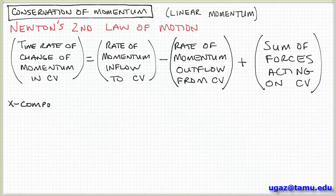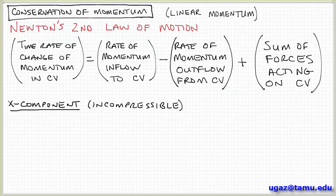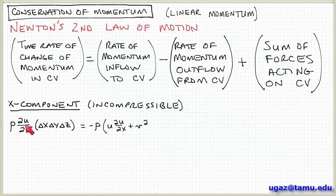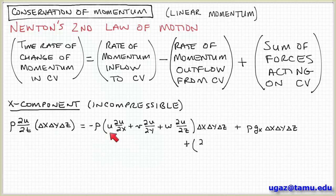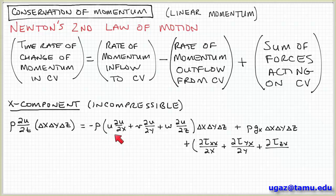We know what these terms are from the previous videos. For the X component, the time rate of change of momentum in the control volume is rho times the partial derivative of u with respect to t, multiplied by the volume delta X delta Y delta Z. The inflow minus outflow term can be expressed as minus rho times the quantity: u partial of u with respect to x, plus v partial of u with respect to y, plus w partial of u with respect to z, where u, v, and w are the x, y, and z components of the velocity vector.